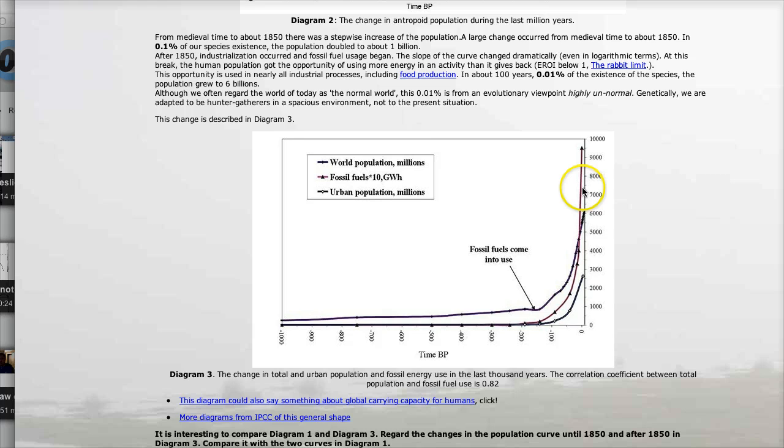This red one became exponential, which means the urban population grew exponentially, which means the world population, which is this in purple, also grew exponentially.